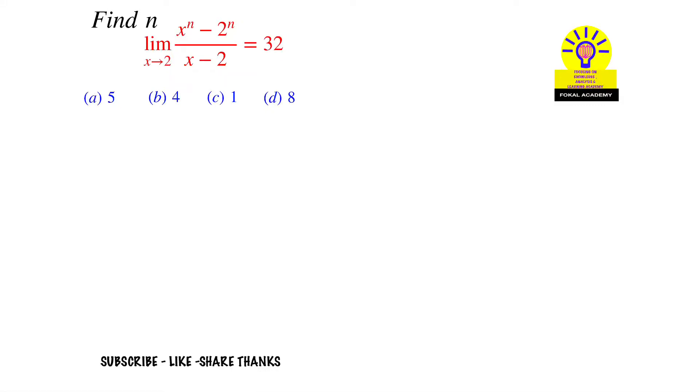Hi, dear ones. In this problem, how can you find the n value? An equation is given in terms of limits: limit as x tends to 2 of (x^n - 2^n)/(x - 2) = 32. How can you find the n value?